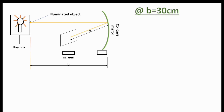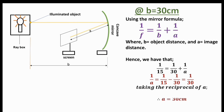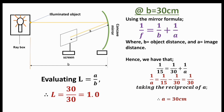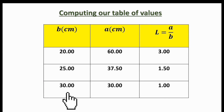When b equals 30 centimeters, still following the same procedure: one over 15 equals one over 30 plus one over a. Making one over a the subject gives one over a equals one over 30, so a equals 30 centimeters. Evaluating l: a over b equals 30 over 30, which equals 1. In the table: b = 30.00, a = 30.00, l = 1.00.